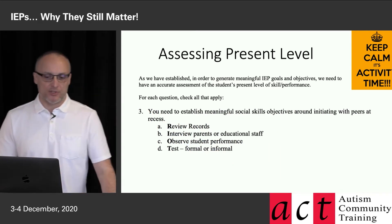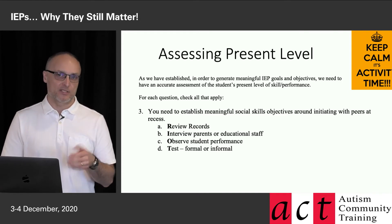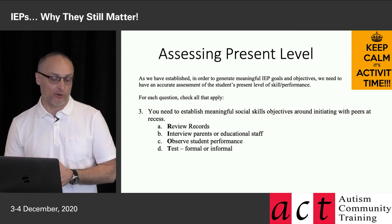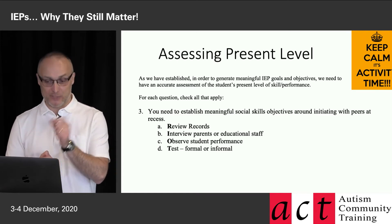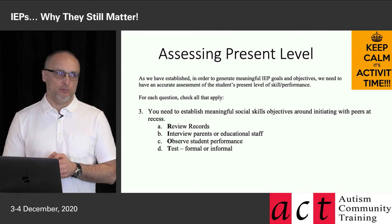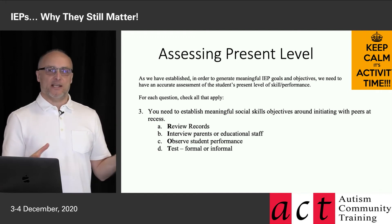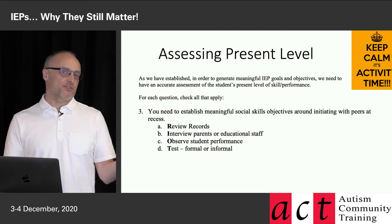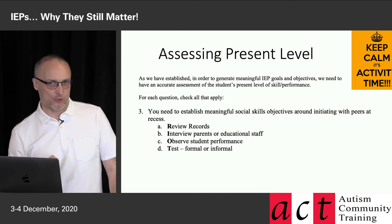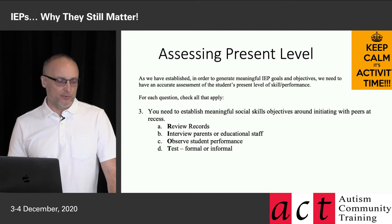That's another reason for doing baseline assessment — sometimes you assess and discover there's no problem, and you can allocate time and resources to other goals. Example three: you need to establish social skills objectives around initiating with peers at recess. Could you look in records? Probably won't find what you're looking for. Could you interview the staff outside at recess? They're really there to police problems, and if there aren't problems the student isn't on their radar. They won't know the nuanced information about social initiation success — just whether he's getting into trouble. There's no test for recess social behavior. So just go outside and follow him around and you'll figure it out.